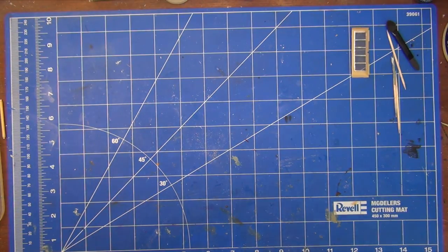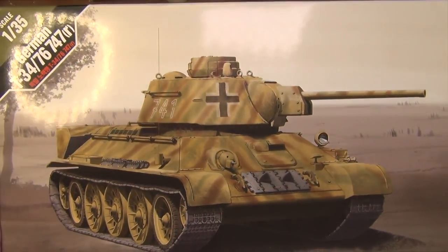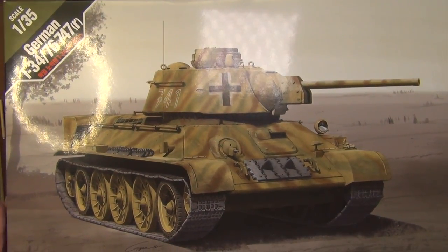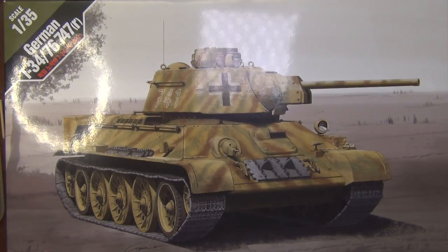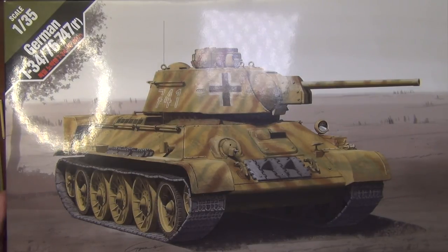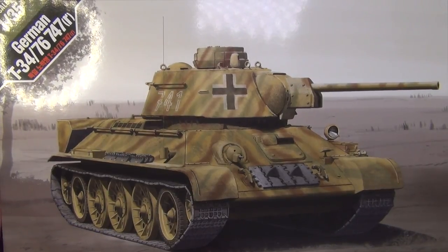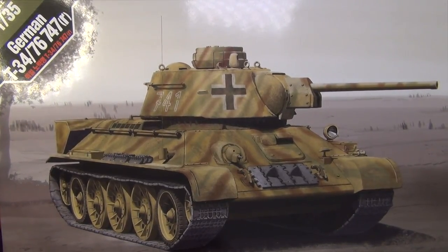So this first one is going to be on this, which is the Academy 1:35th scale German T-34-76 747, 747 signifying this is a captured Russian T-34 obviously that's seen service with the German army. And depending on what variant you decide to build, it's around 1943, 1944, something like that.